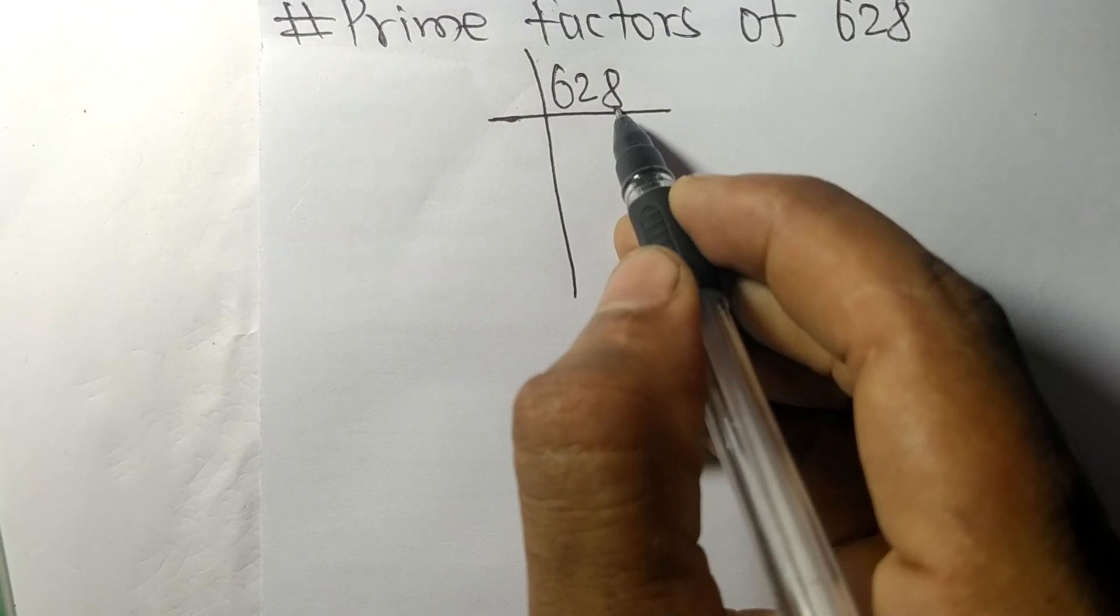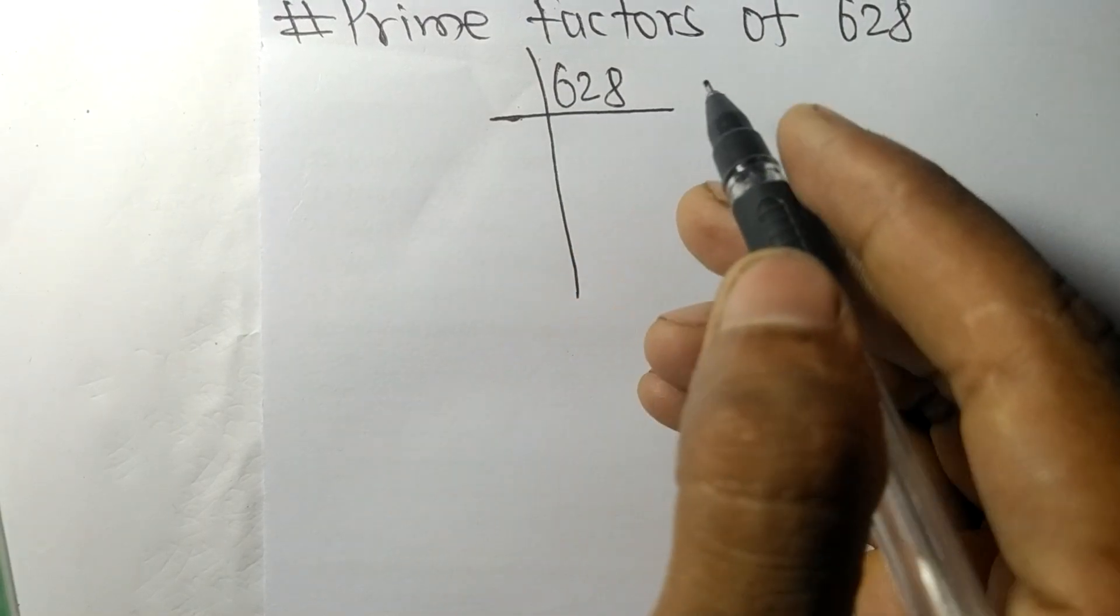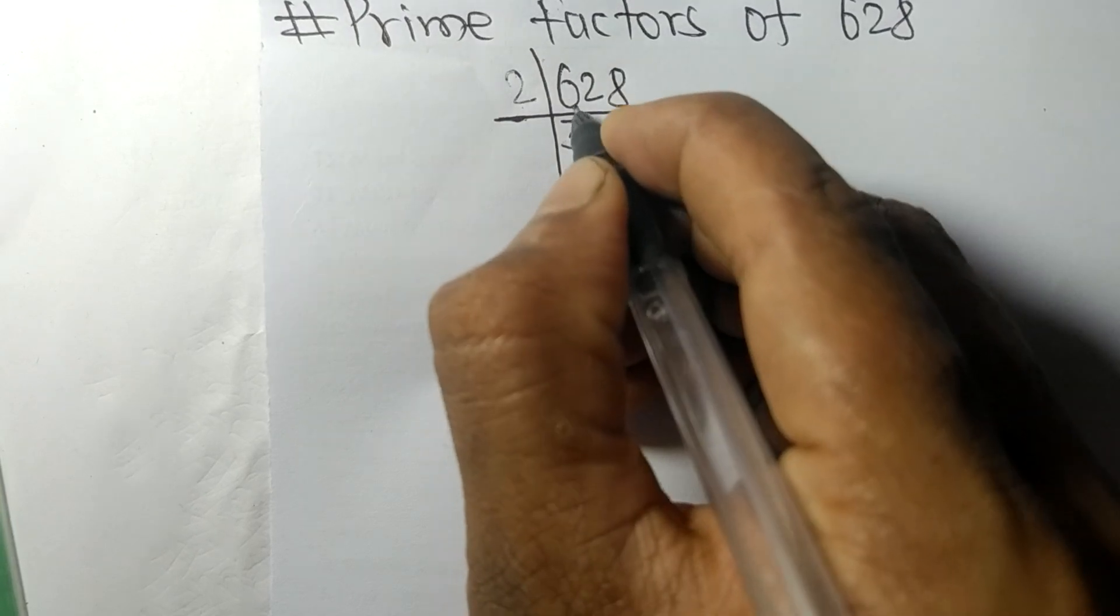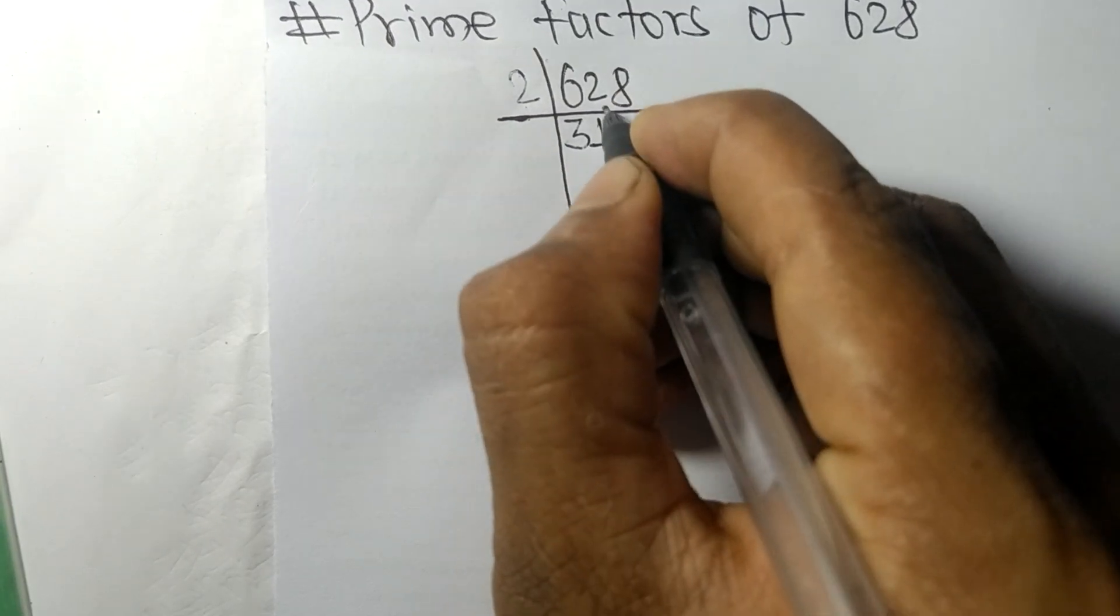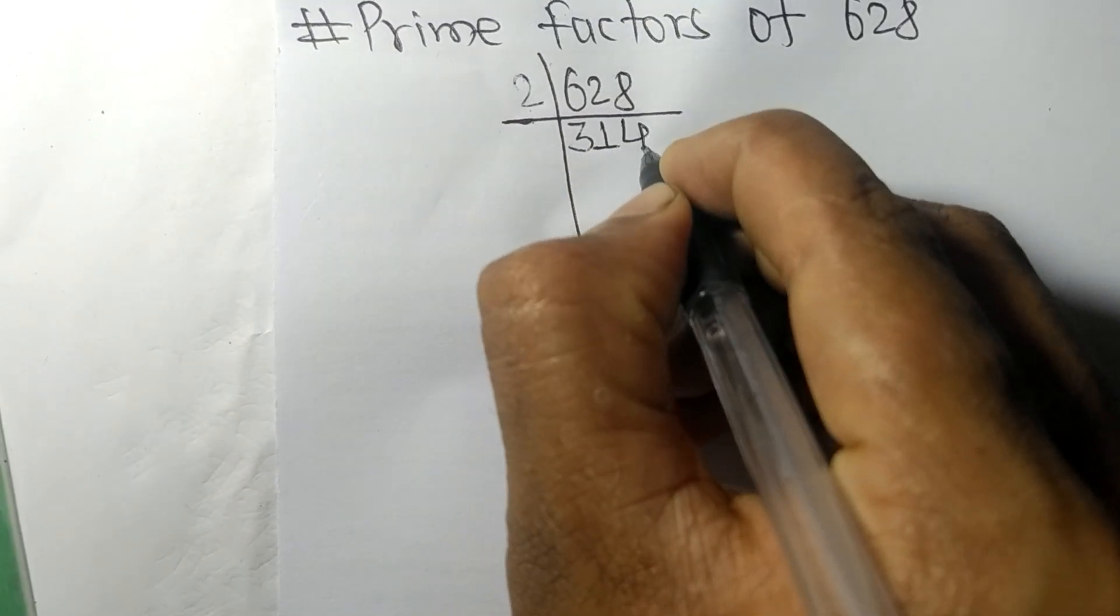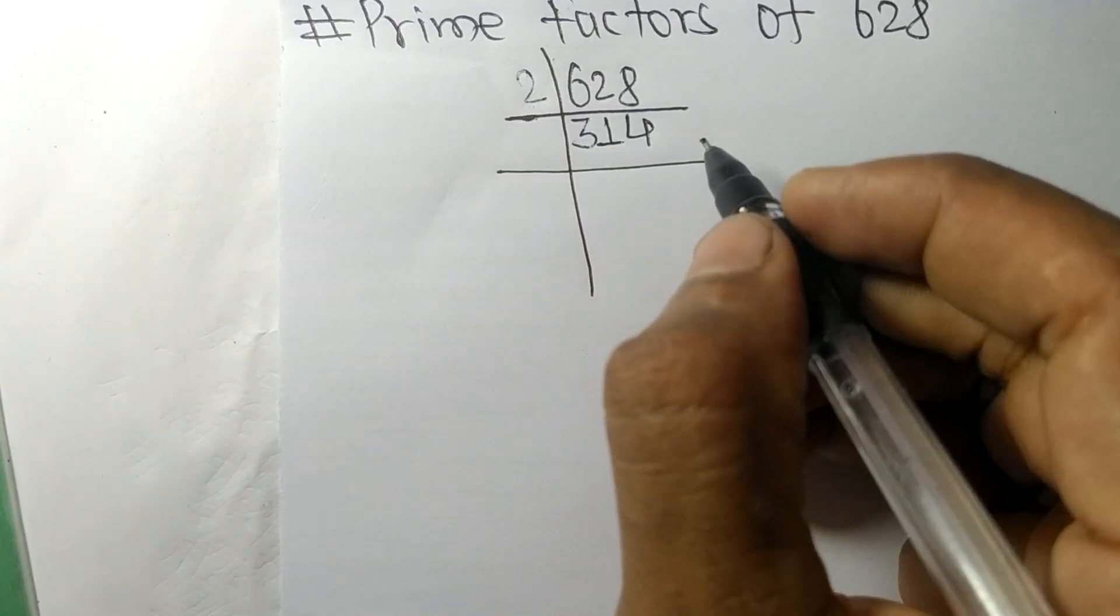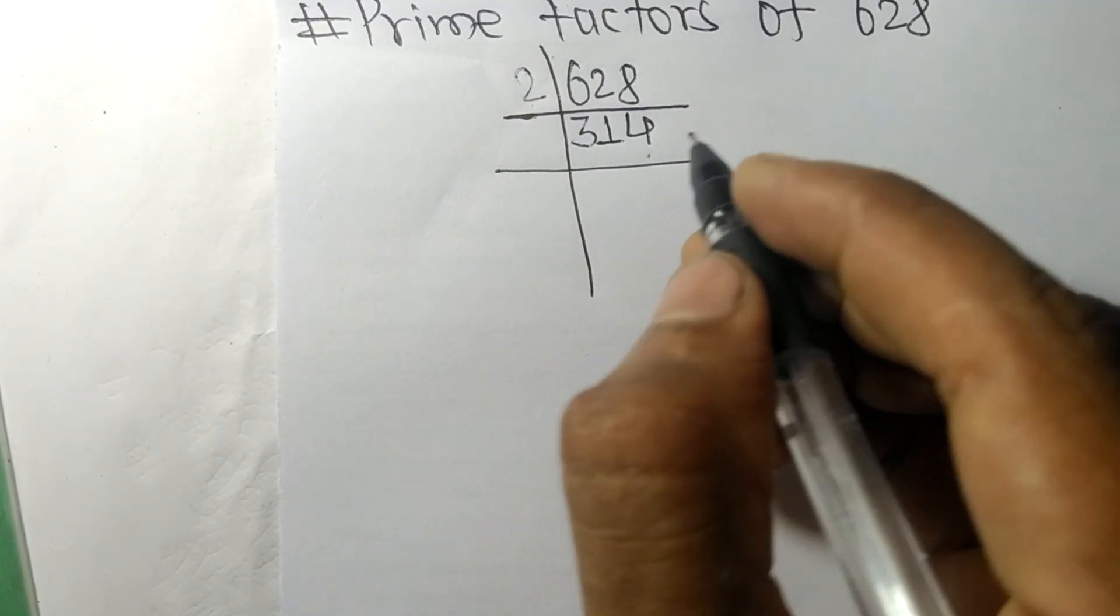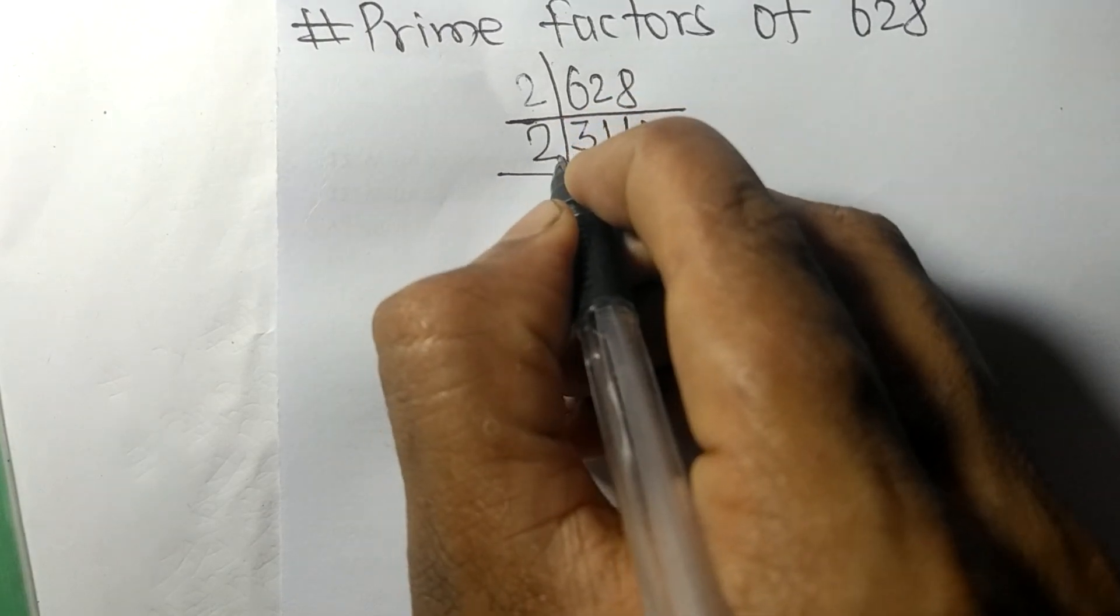At last it contains an even number 8, so this whole number is divisible by 2. 2 times 3 means 6, 2 times 1 means 2, 2 times 4 means 8. Again it has even number 4, so this whole number is divisible by 2.